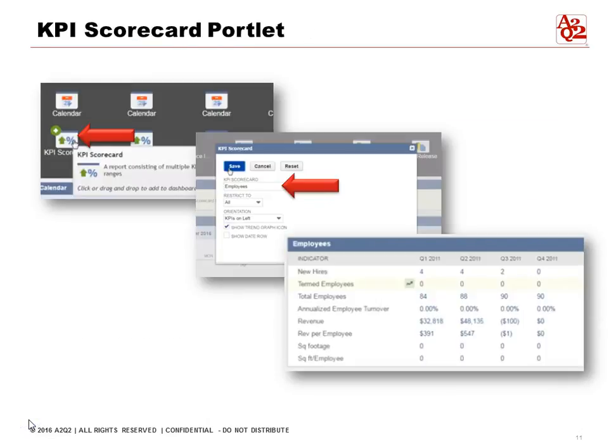Let's add another portlet — let's add the KPI Scorecard and set it up. We would like to see the employee matrix, show the trend graph, and save. This is how it would look: we have the employee matrix and it shows the trend.